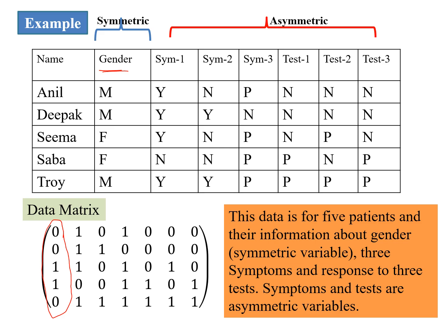We could have done it the other way also. But the rest of the variables, the symptom 1, symptom 2, symptom 3, as we can see this is for 5 patients and their information about gender, 3 symptoms, and response to 3 tests. So these are asymmetric variables. So whether symptom is present or not, yes, or it could be positive, negative, whatever be our coding, meaning the same.